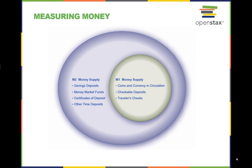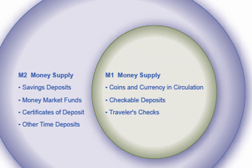M1 and M2 money have several definitions ranging from narrow to broad. M1 equals coins and currency in circulation plus checkable demand deposits plus traveler's checks. M2 is defined as M1 plus savings deposits plus money market funds plus certificates of deposit and other time deposits.